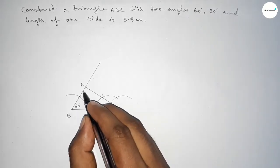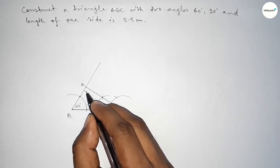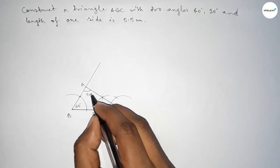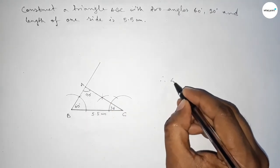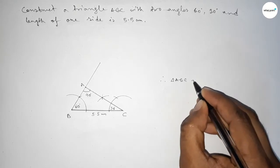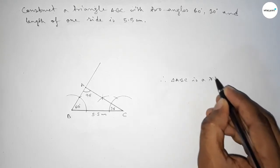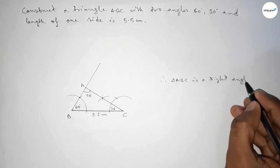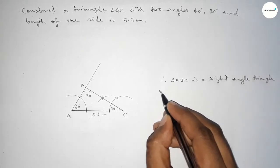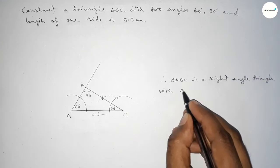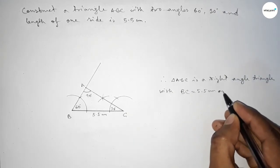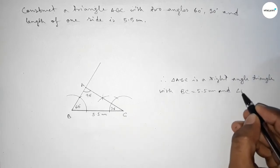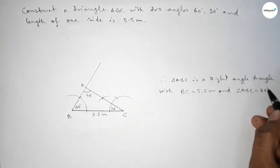Therefore, triangle ABC is a right angle triangle with side BC equal to 5.5 centimeters. Given side BC equals 5.5 centimeters, angle ABC equals 60 degrees, angle ACB equals 30 degrees.